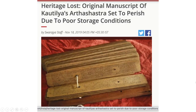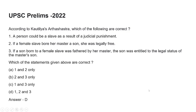India's political system and administration were well organized, showing that India was already well structured. A current affairs piece notes: 'Heritage lost — original manuscripts of Kautilya's Arthashastra said to perish due to poor storage conditions.' These things should be properly preserved as they are the pride of India. Another UPSC question asks: 'According to Kautilya's Arthashastra, which one of the following is correct?' Try to solve it.